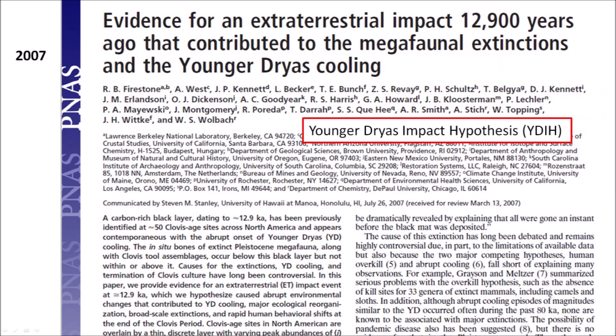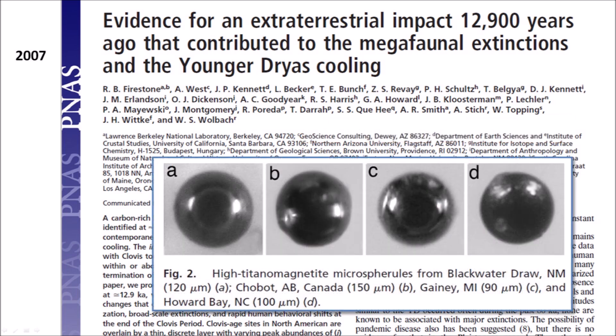The source of contention is a paper published in the Proceedings of the National Academy of Sciences in 2007, titled 'Evidence for an Extraterrestrial Impact 12,900 Years Ago that Contributed to the Megafaunal Extinctions and the Younger Dryas Cooling,' by Richard Firestone and 25 co-authors. This paper established what became known as the Younger Dryas Impact Hypothesis, or YDIH. As proof of the extraterrestrial impact, the paper mentioned that many Clovis Age sites in North America are overlaid by a thin, discrete layer with varying abundances of magnetic grains with iridium and magnetic microspherules.